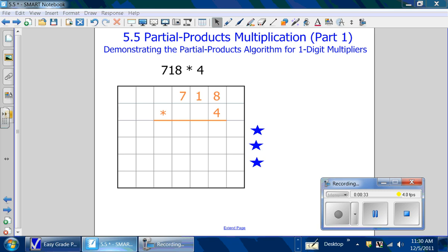718 times 4. We'll start with 4 times 700. We'll start with the simple problem of 4 times 7 first. 4 times 7 equals 28. Then we can add our two zeros back on. 2,800.